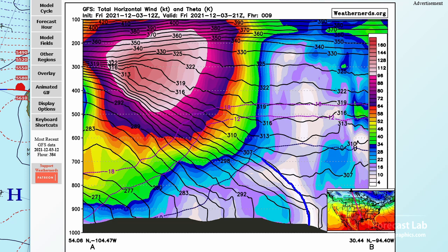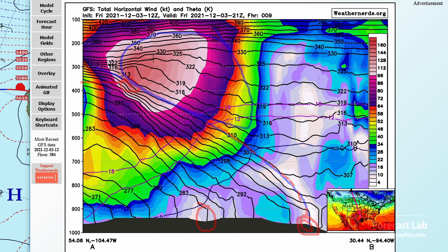Let me draw that out for you. That right there is likely the frontal inversion. It looks like we're picking up a boundary out around Oklahoma, rising up to higher heights across the Dakotas and then up in Canada. The frontal inversion is way up there at about 20,000 feet, and you can see how the jet stream lies right above it.